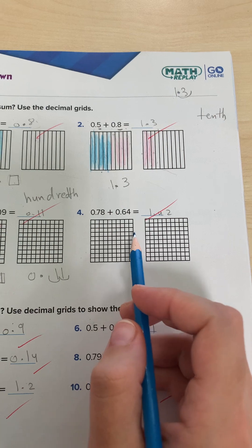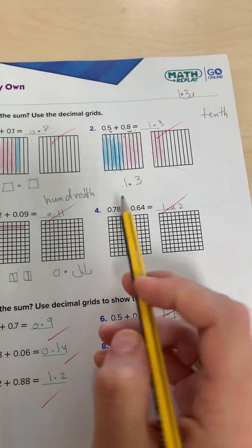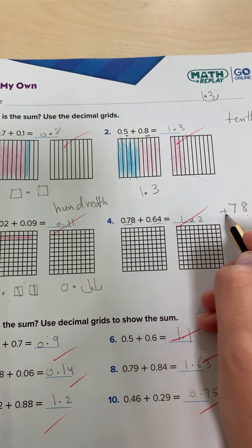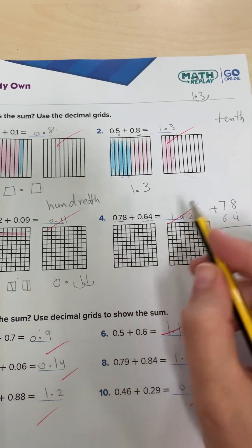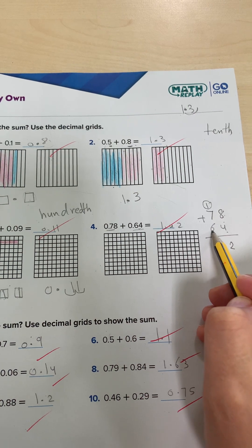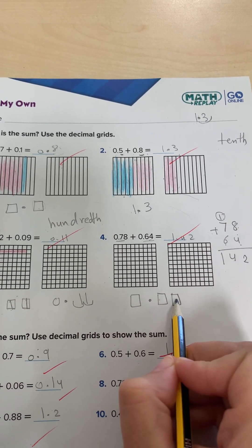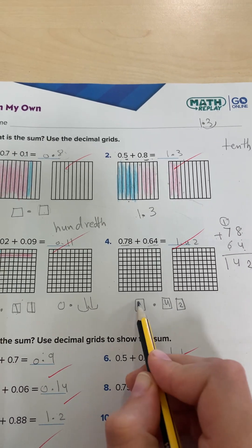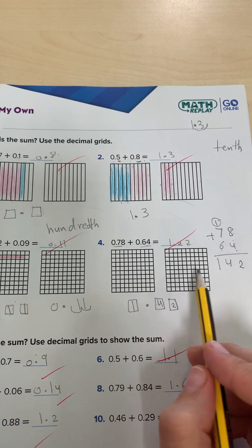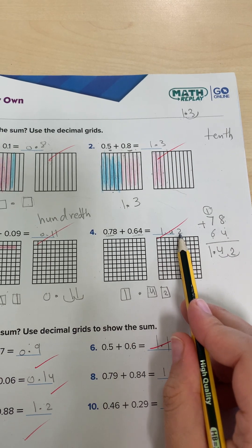Now 0.78 plus 0.64. If you color this one it will be fully colored, so you color it using different colors. I'll use the addition strategy: 78 plus 64 without the decimal. Eight plus four equals twelve — write 2, carry 1. Seven plus one is eight, eight plus six is fourteen. Since this is hundredths, we allow two digits after the decimal. So 42 stays here, and 1 carries over. Count from the right for the decimal: the answer is 1.42.